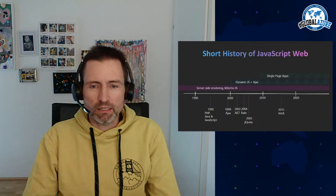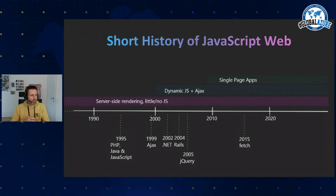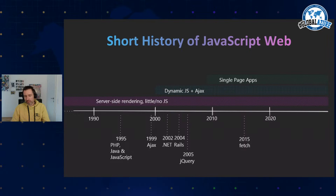The next thing that happened was single-page applications. Frameworks like Backbone came first, then Angular, React, and others. These frameworks enabled a pattern where everything runs on the client and the server is just used to fetch data. Also in 2015, the Fetch API was introduced into browsers, which made fetching data from the back end easier than using XMLHttpRequest.